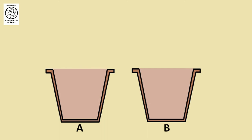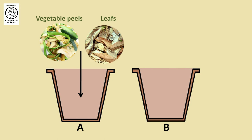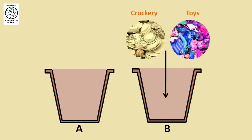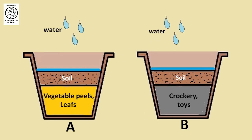Okay, ma'am, then what should we do? I'll show you an illustration by which you will be able to see what is the fate of these waste products and how we should dispose of the waste. Here you can see two pots — Pot A and Pot B. In the first pot we are putting vegetable peels and leaves; in the second pot we are putting broken crockeries and toys. Then we'll cover them with soil and keep them moist.